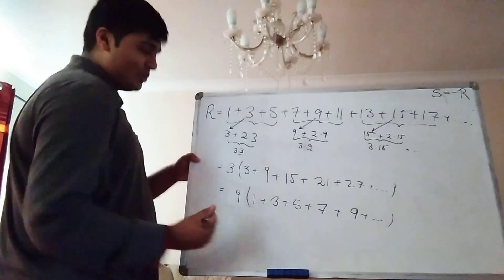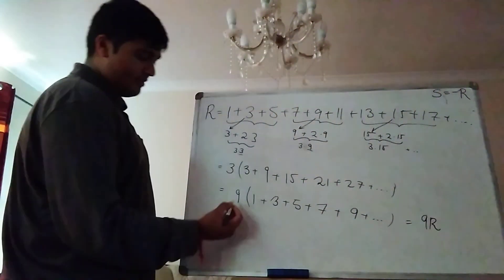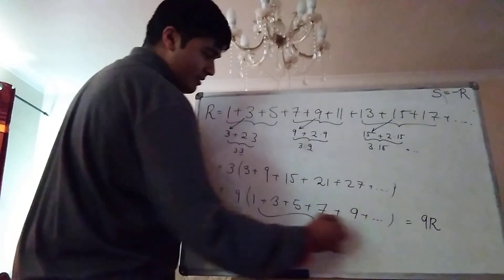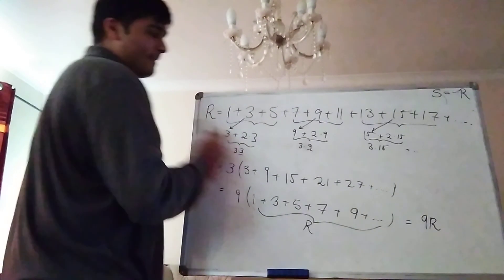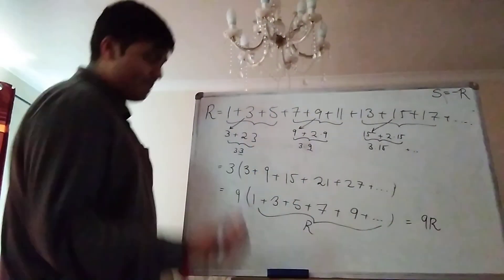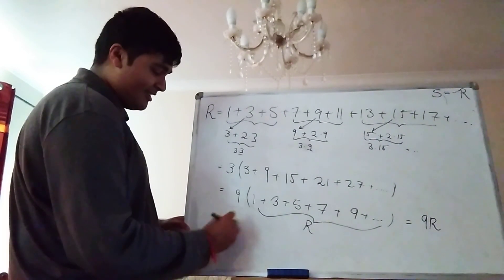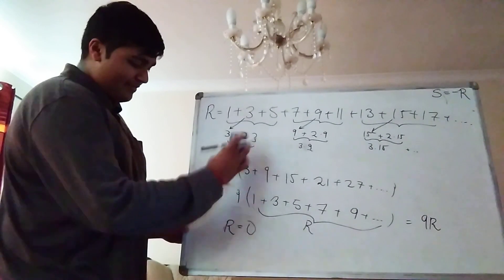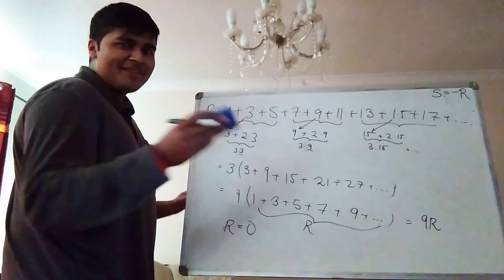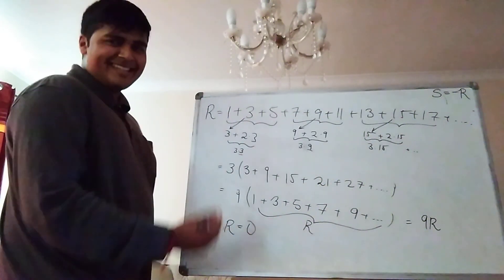So this thing here equals 9R. So from the 9 out front. And then this thing here is R. By definition. So we've shown that R equals 9R. But if R equals 9R then subtracting R from both sides gives us 8R equals 0. But then if I divide both sides by 8 I get that R equals 0.